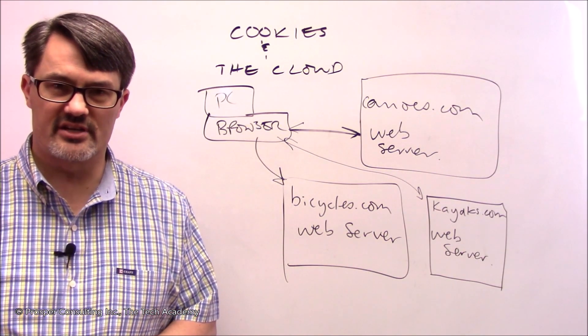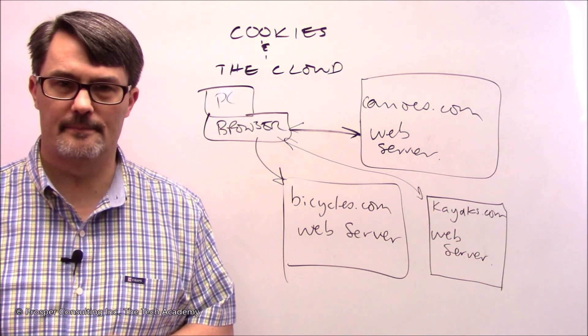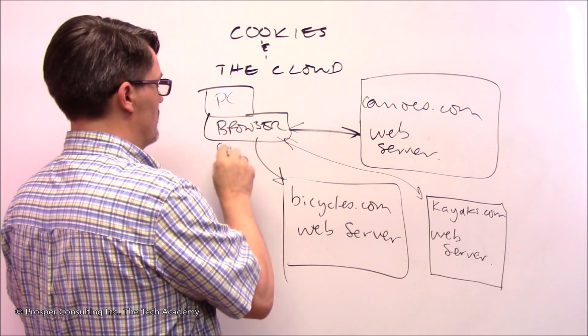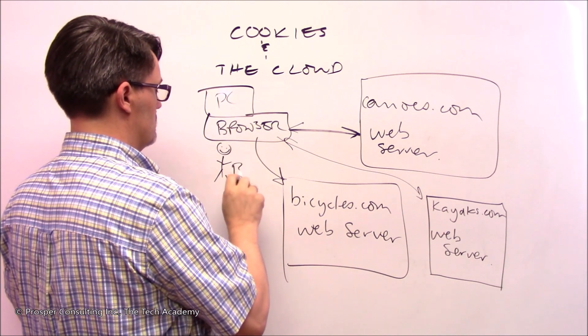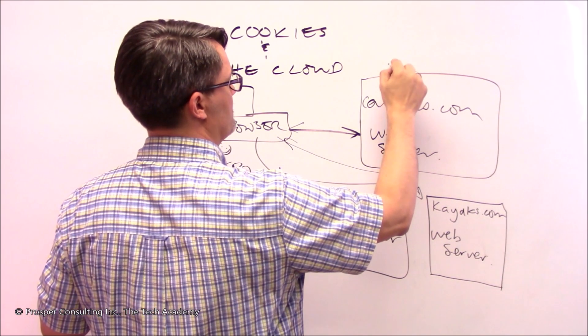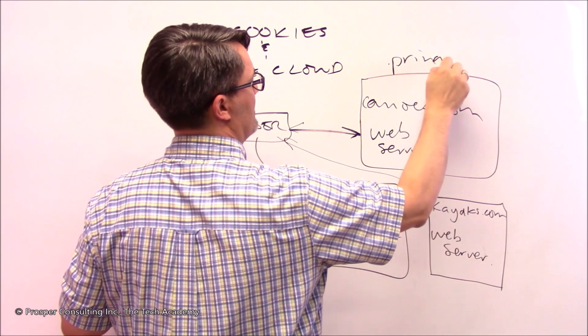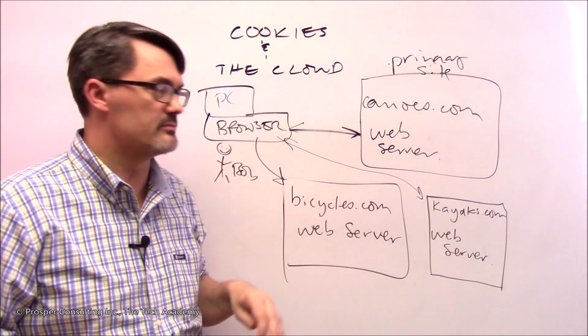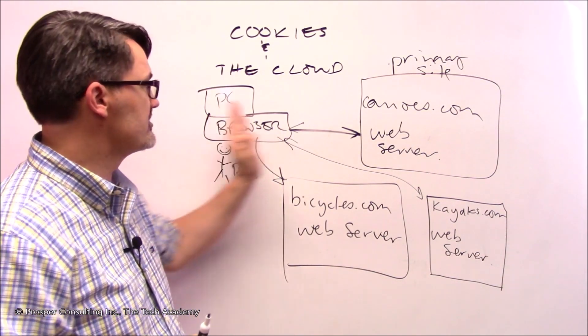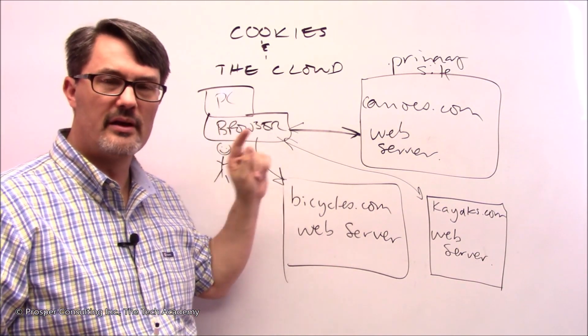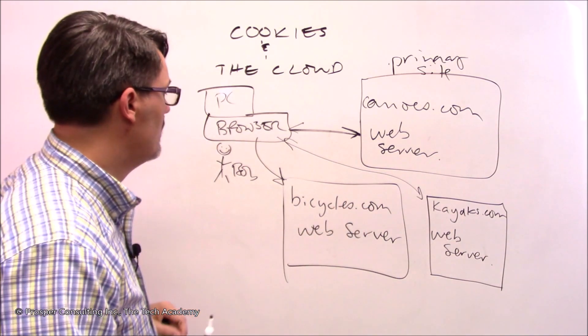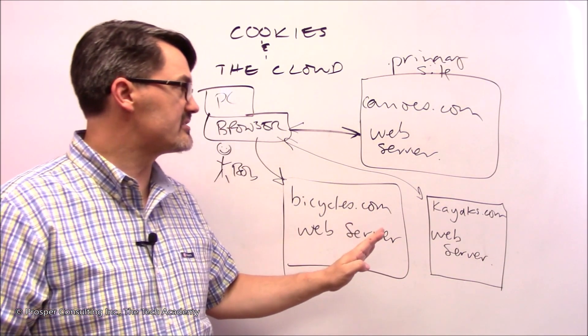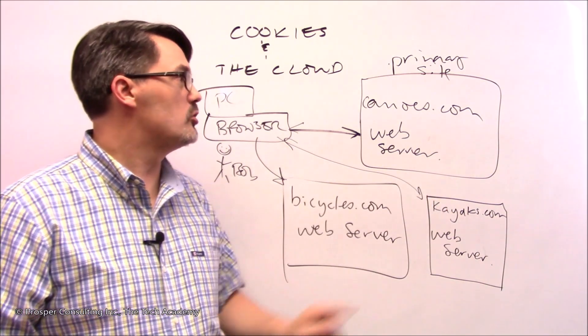Now let's add a little bit of complication and discuss a concept called a third party cookie. If you think about the primary way this works, you have two parties involved. You have the user, Bob, and you have the website he's going to. This is his primary site. For the purposes of this illustration, Bob happens to be visiting canoes.com. This is two parties. Let's see how we can add a third party in.